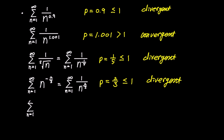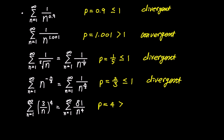Lastly, what about the sum of 3 over n to the power of 4? When we expand the parenthesis, it becomes the sum of 81 over n to the power of 4 as n goes from 1 to infinity, indicating that the p-value is 4. Since the p-value is greater than 1, this infinite series converges.